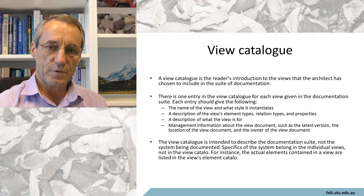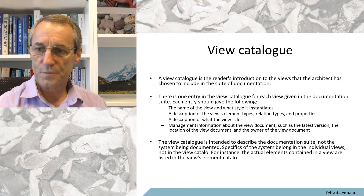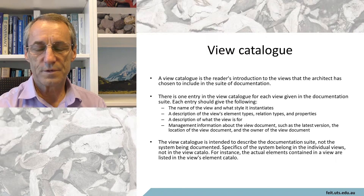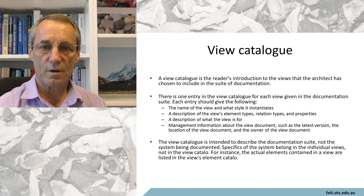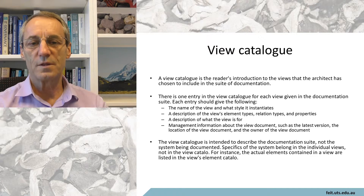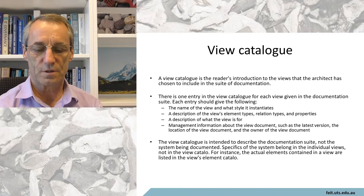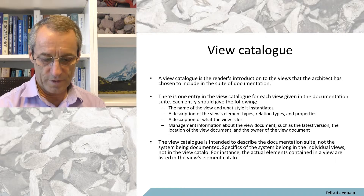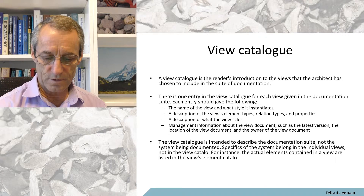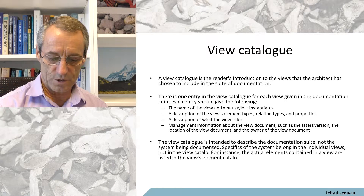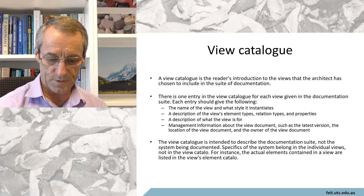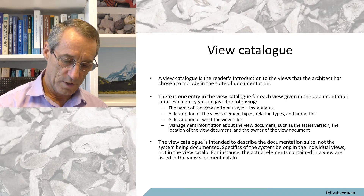There must be a view catalog — call it your table of contents if you wish — but there's got to be a catalog of what's in this package of architecture documentation. The view catalog is the reader's introduction to the views that the architect has chosen to include in the suite of documentation, with one entry for each view.